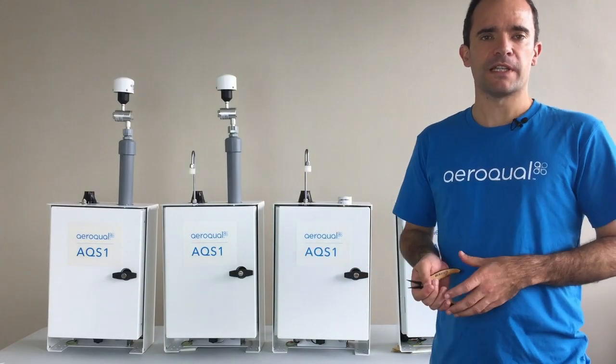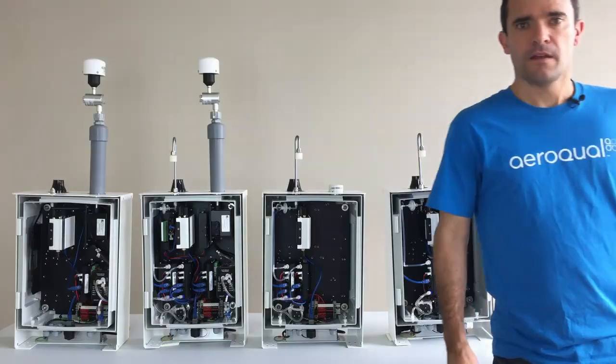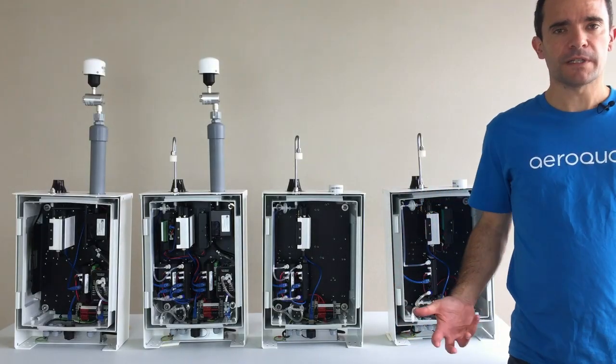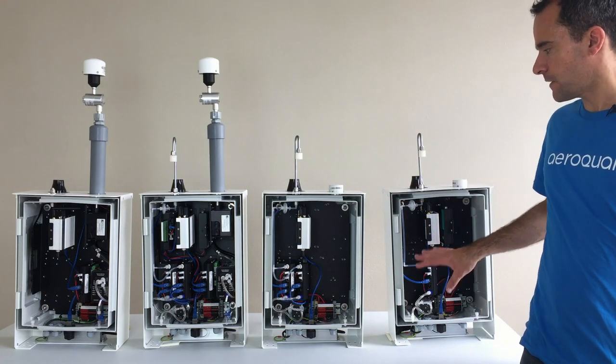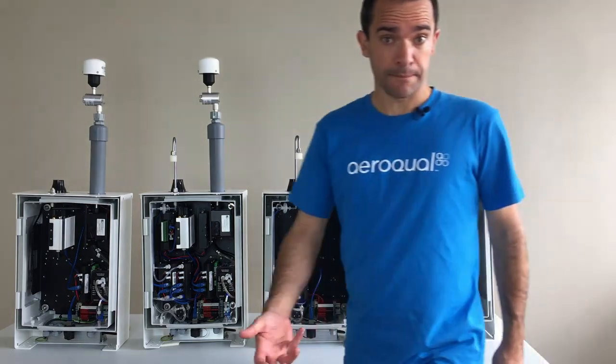Just to make the comparison a little bit easier, what we're going to do is remove the doors. So now we have the doors off, it's a little bit easier to have a look at the inside. Let's take a quick look first of all at the two AQS1s which are configured with gas only.